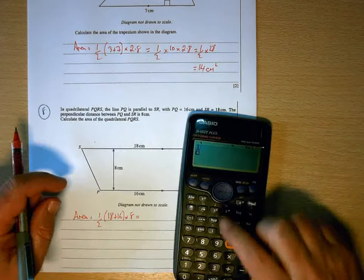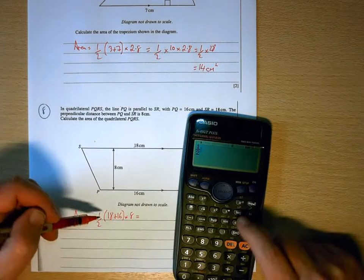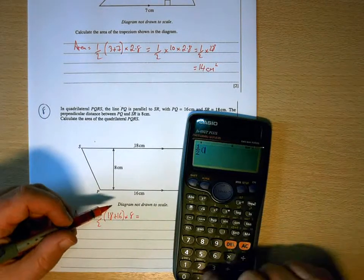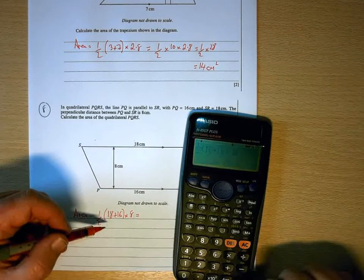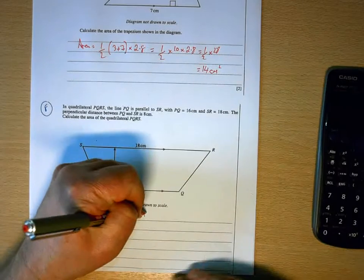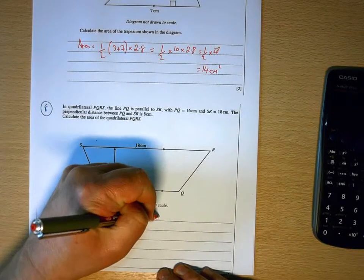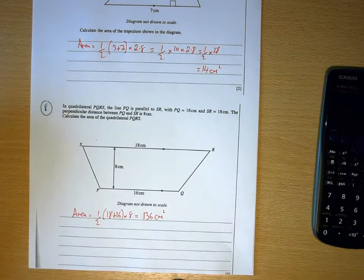So, again, let's make it look exactly the same as the way we've written it. So it's going to be half, open bracket, 18 plus 16, times 8, 136 centimetres squared. So that's area of trapezium.